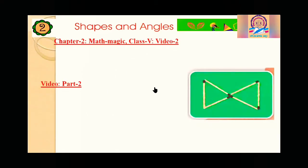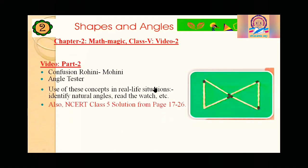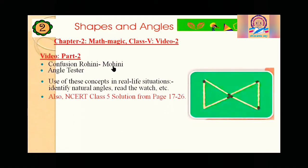Now it is video part 2. In part 2 we will learn about the confusion of Rohini and Mohini. Mohini has tried to make shapes several times but she couldn't make the shape like Rohini, so she was confused. What was the confusion, and why the confusion?